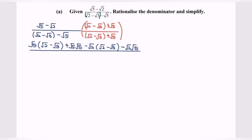For the denominator, make use of the formula a squared minus b squared, because we are dealing with the multiplication of the conjugate. So we have bracket square root of 2 minus square root of 3, squared, minus bracket square root of 5, squared. Kindly simplify the situation.